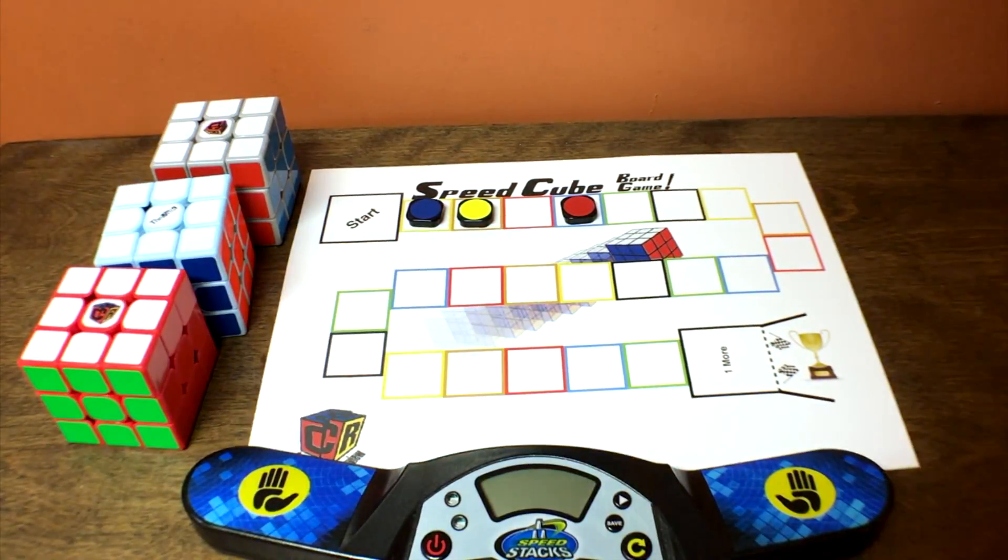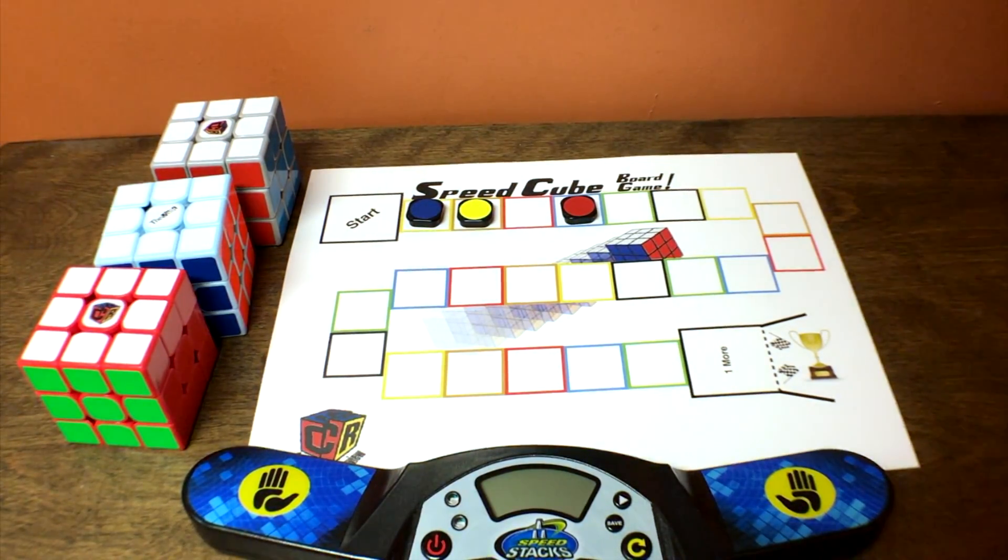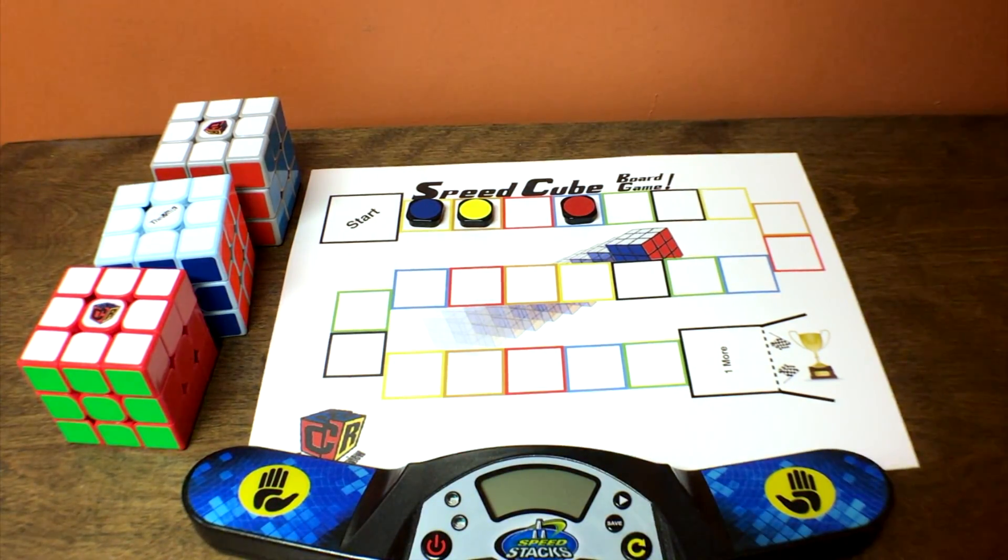One other thing you can add to this is you can see all the squares are different colors. If you are color neutral, and let's say other people are, you can force yourself and say, okay, for this solve, I have to do an orange cross, or orange on bottom, depending on what method you use. This could work for 3x3, 2x2, 5x5, megamix, whatever puzzle you want to use it on. And that's pretty much it.